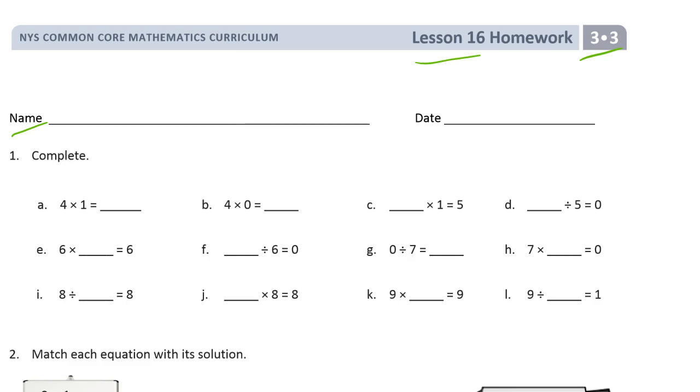4 times 1 equals, we're looking for a product here, that's 4. 4 times 0, anything times 0 is 0. And now here we're looking for something times 1 equals 5. Well any number times 1 is itself, right? So if we end up with 5 for a product, it's got to be 5 times 1 is 5.